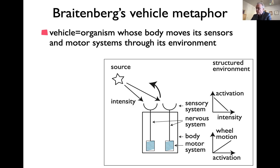Breitenberg taught in summer schools — I think one of the regular summer schools in Corsica on principles of neuroanatomy. He used the notion of vehicles to illustrate functional implications of the architecture of the brain. I'm giving you a highlight — I'm only talking about one vehicle out of about 40 vehicles in his book. Each vehicle illustrates a particular brain circuit and what you can do with it.